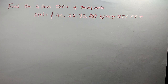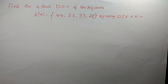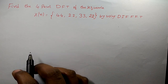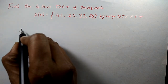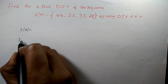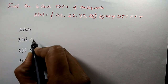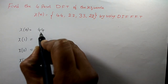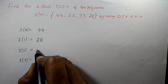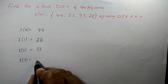Find the 4-point DFT of the sequence x(n) = [44, 22, 33, 22] using decimation in frequency FFT. The length of the sequence is 4 and capital N is also 4. In decimation in frequency FFT, the input is in natural order and the output is in bit-reversed order. So the inputs are x(0)=44, x(1)=22, x(2)=33, x(3)=22.